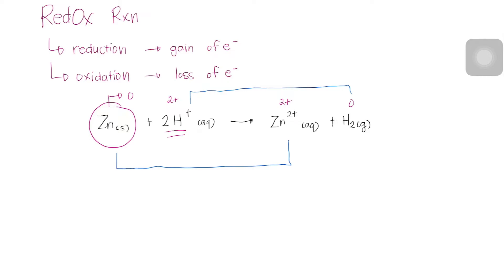In identifying which substances are reduced and oxidized, it is best to set up your redox reactions like this one. This will help you to take into account the changes. From this redox reaction, we can therefore say that zinc metal undergoes oxidation and is therefore oxidized, while the acid in the form of hydrogen ion undergoes reduction and is therefore reduced.